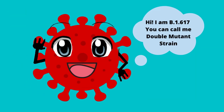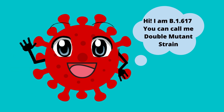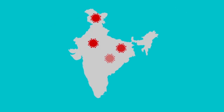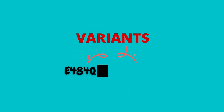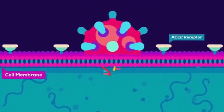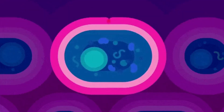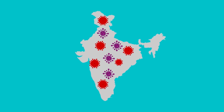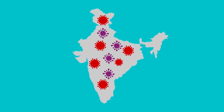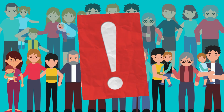The B.1.617 variant of COVID-19, known more commonly as the double mutant strain, was first detected in India in October last year. As the name suggests, the strain involves two mutations: E484Q and L452R. Lab tests suggest both help the virus infect cells and evade antibodies. This variant fueled India's deadlier new wave of cases, making it the world's second-worst hit country, surpassing Brazil.